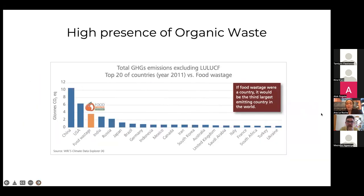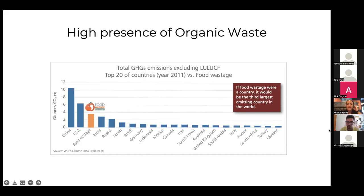About 75 percent of all waste we collect is organic, making it extremely important to address. As this graph shows, if food wastage were a country it would be the third largest emitting country in the world, behind only China and the US — that's how intensively we need to think about organic waste and food waste management.